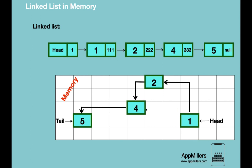For example, to access node 3 (value 4), we have to traverse from node 1, then node 2, then node 3. In an array, we always know the location of elements by their index — if we want the fifth element, its index is 4 (since arrays start from 0). But in a linked list, even if we know the location of the first node, we cannot find the fifth node by adding values to the current location, because the fifth node can be anywhere in memory.